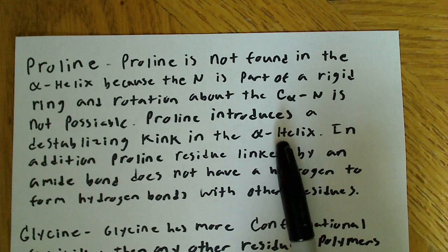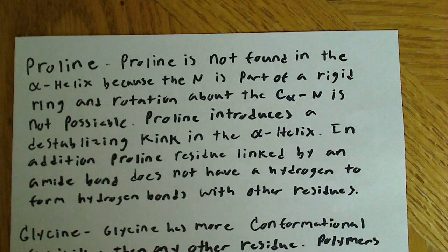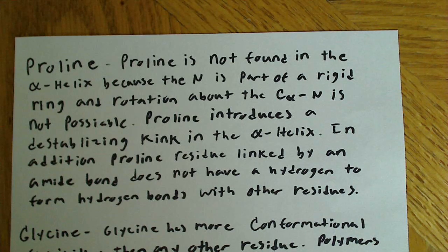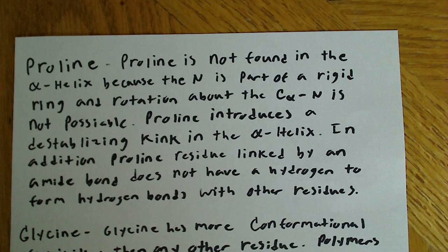Anything that causes destabilization in something like the alpha helix is going to be problematic, and proline does that because it has a ring, and rings introduce rigidity to the structure. In addition, it won't have a hydrogen to form hydrogen bonds with other residues, and hydrogen bonding between the backbone atoms is extremely important for secondary structures such as the alpha helix.